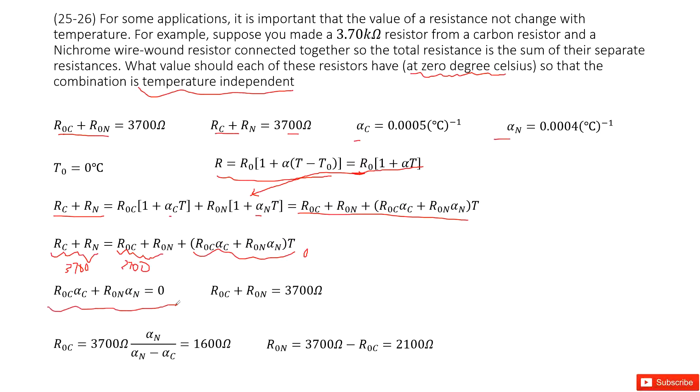Now you can see we get this term and we got this from the very beginning. The initial combination of the resistance is 3700 ohms. Now you have two equations, two unknown quantities. Alpha C and alpha N are just the given constants. So now you can solve these two equations to get R0C and R0N. Input all the given quantities, you can find the answer. Thank you.